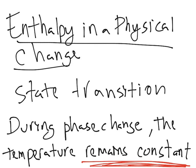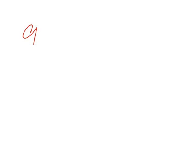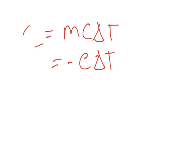To calculate the heat flow in a phase transition, we cannot use our calorimetry equations like the MCAT equation and the mC delta T equation, so we have to use something different. We're introducing a new formula to calculate the heat flow in a phase change. The heat flow of the reaction is equal to the number of moles times the change in enthalpy of the transition.